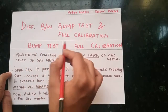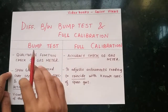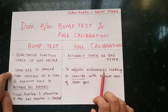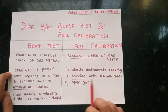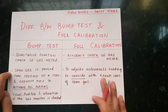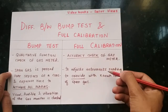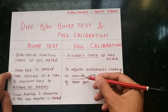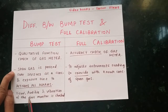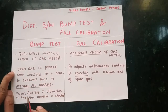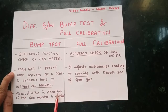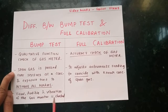In bump test mode, the goal is to activate all alarms. In full calibration, it adjusts the instrument's reading to coincide with the known concentration of the span gas — this is the accuracy check where the readings are adjusted to match the span gas. Bump test is just for checking all the alarms.